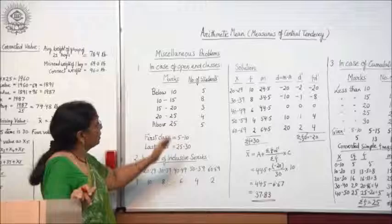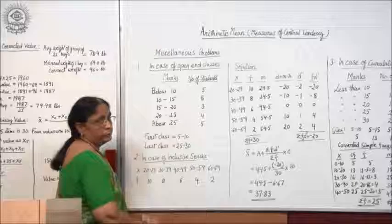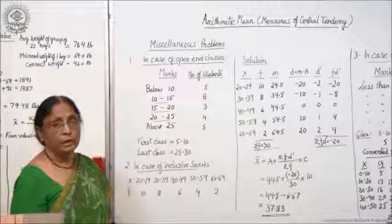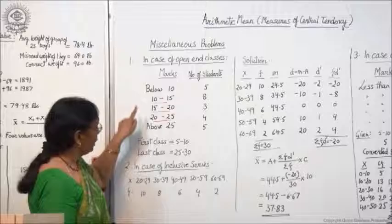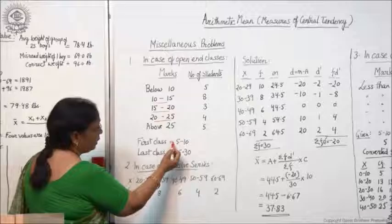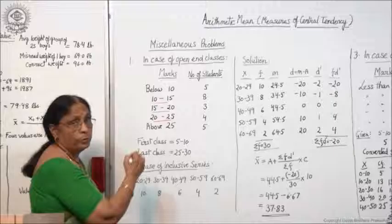How to calculate arithmetic mean in this case? Here the marks and the number of students are given. In such a case, first you will see what is the class interval. Now in this example, the class interval here is 5, here again it is 5, here also it is 5. So you will assume that here again the class interval will be 5, and here also we will assume it as 5 because there is equal class interval. So the first class will be 5 to 10 and the last class will be 25 to 30.